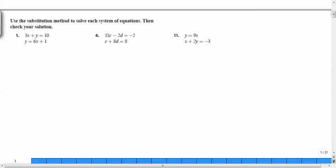Use the substitution method to solve each system of equations. Number one. 3x plus y equals 10, and the second equation, y equals 6x plus 1. What should we do here first? Solve for one of the variables, right?